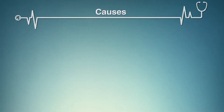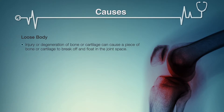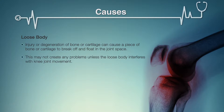Some examples of mechanical problems that can cause knee pain include loose body. Sometimes injury or degeneration of bone or cartilage can cause a piece of bone or cartilage to break off and float in the joint space. This may not create any problems unless the loose body interferes with knee joint movement, in which case the effect is something like a pencil caught in a door hinge.